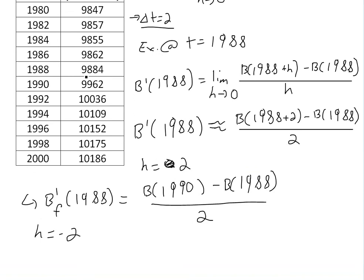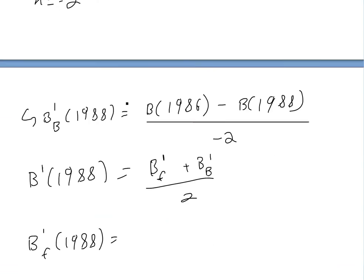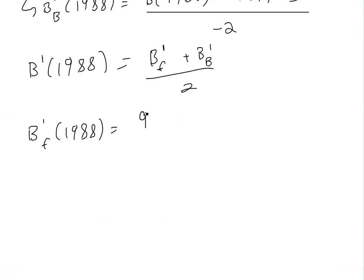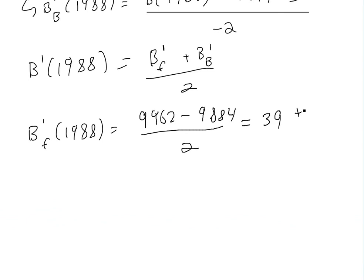So that's 9962 minus 9884, divided by 2. If you put that in a calculator, this equals 39 — so about 39,000 population per year increase. That's how fast it's increasing using the forward difference.